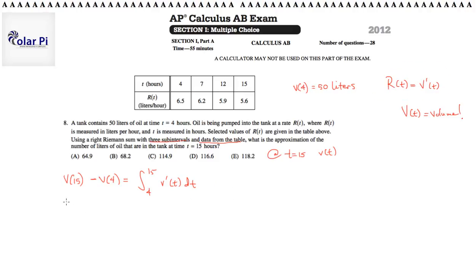But, v prime of t was another name for r of t. So, we could say that v of 15 minus, and again, we're after v of 15, v of 15 minus v of 4 is the same as 4 to 15 r of t dt.